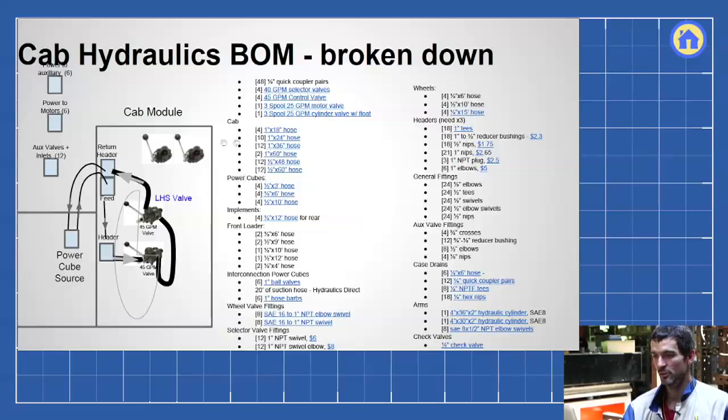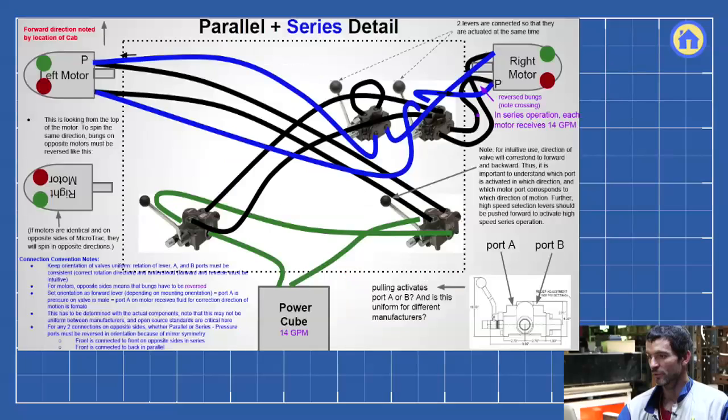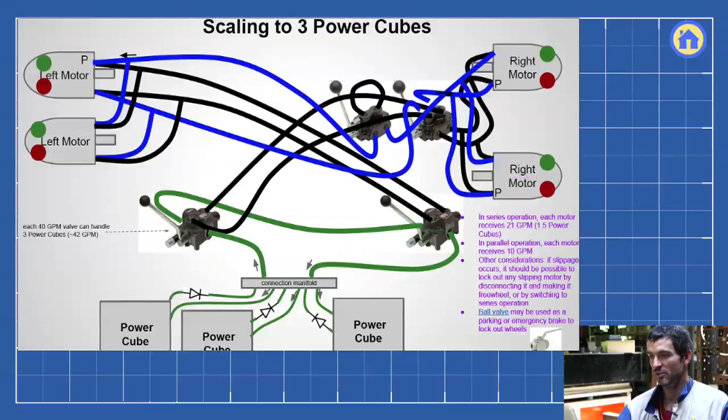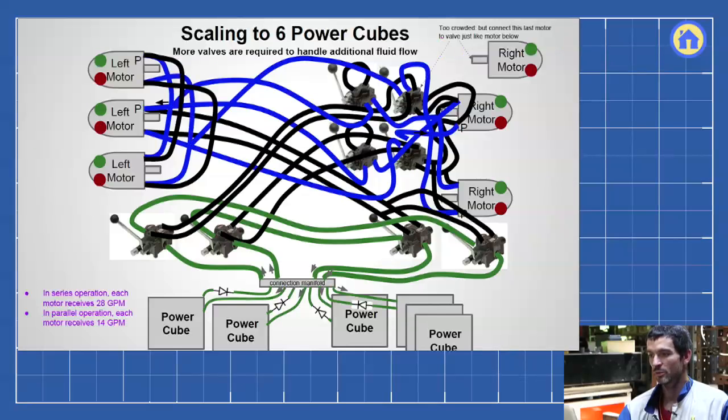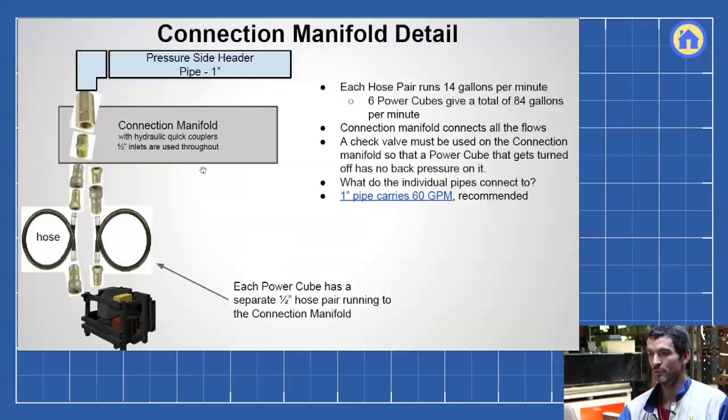So here's a bill of materials. You can actually get all these materials primarily from surplus center. Here's a detailed bill of materials. I go through different considerations here, how you make this circuit more and more complex to accommodate six power cubes. So here we have basically a connection manifold with all the quick couplers conceptually going to all the different universal rotors.